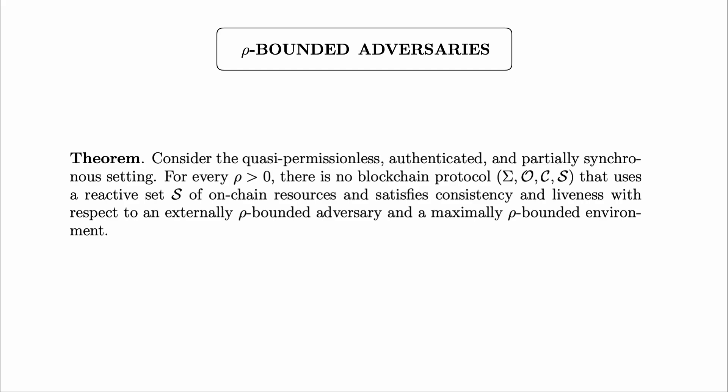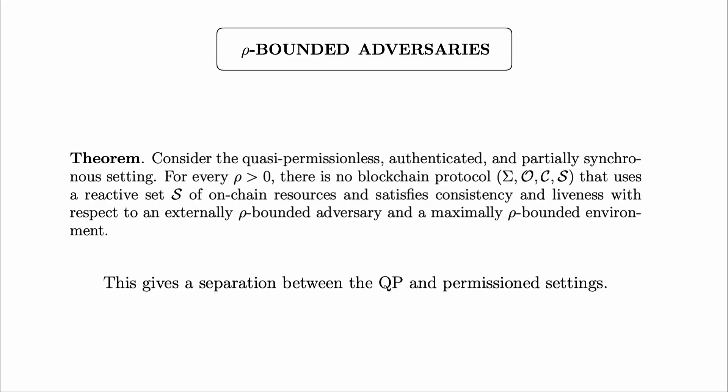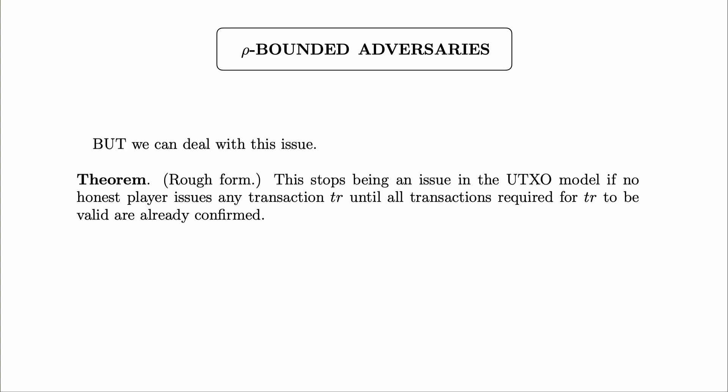Here is the more precise version of the theorem. In the quasi-permissionless authenticated partially synchronous setting, for every row rate greater than zero, there is no blockchain protocol that uses a reactive set of on-chain resources and satisfies consistency and liveness with respect to an externally row-bounded adversary and a maximally row-bounded environment. This gives us a separation between the quasi-permissionless and the permissioned settings. It's not surprising that we have to consider reactive sets of resources to get such a separation. But sometimes that might sound like bad news — in fact we can deal with this issue.